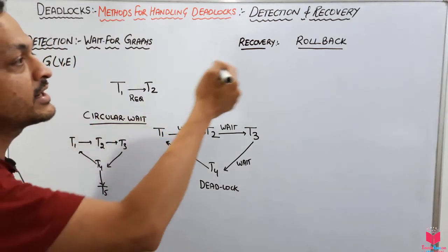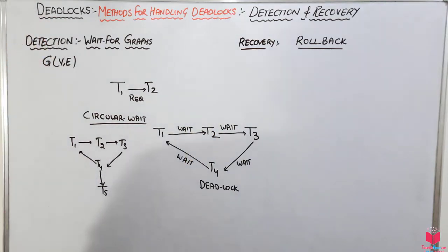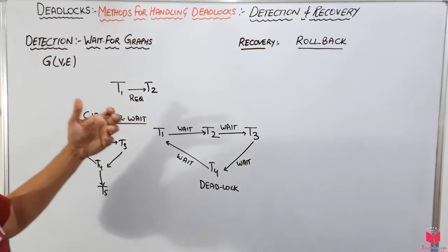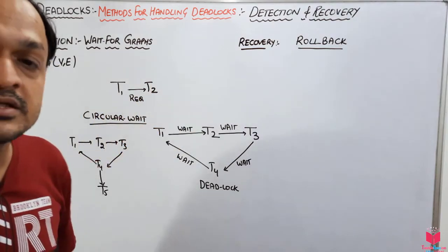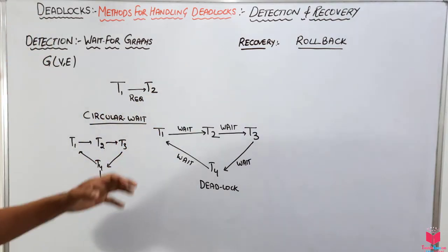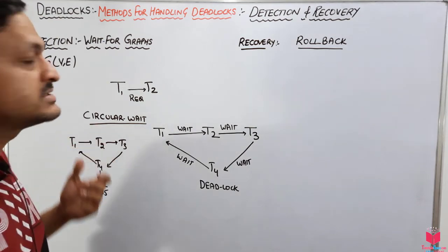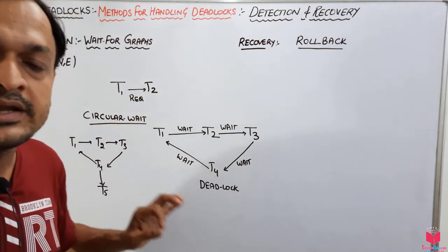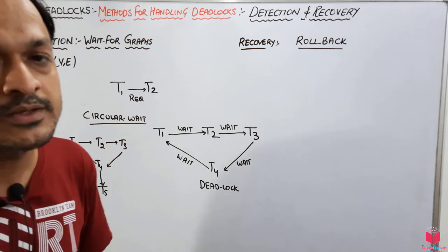In this way, we use rollback to remove the deadlock from the system. This is all about how we can handle deadlocks using the detection and recovery method. If my videos are helping you, please like, share, and subscribe to this channel. Thank you.